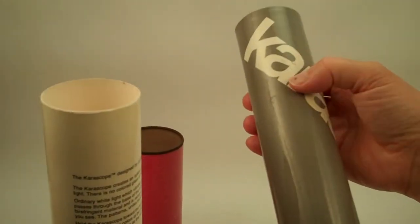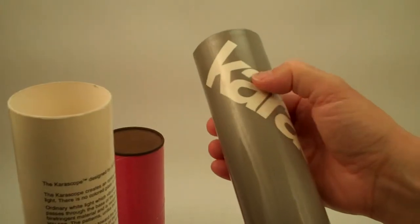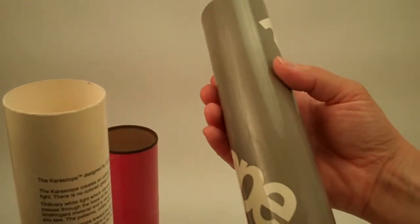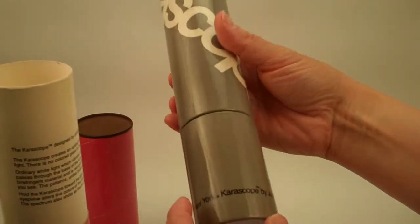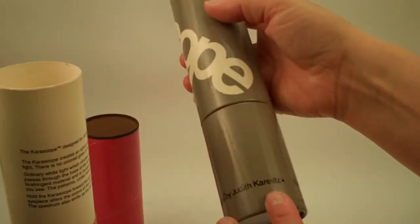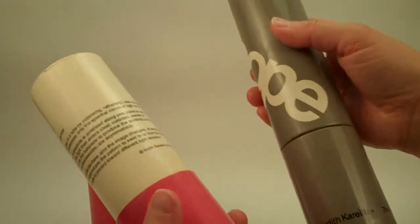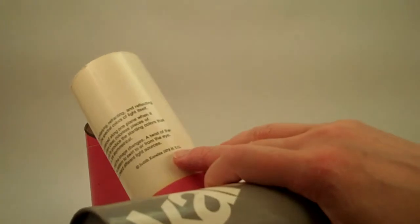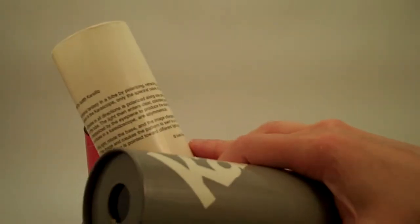And the interior has just a slight bit of soil here, but I think that will clean off. It is on the top surface. The Kerascope by Judith Karelitz. And this was copyrighted in 1978 in New York City.